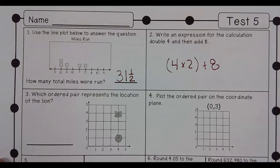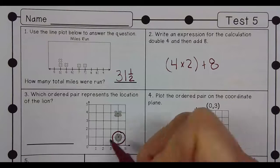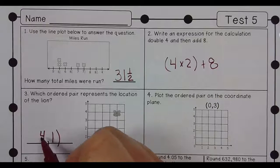Which ordered pair represents the location of the lion? Here is the lion. You go over four, up one.